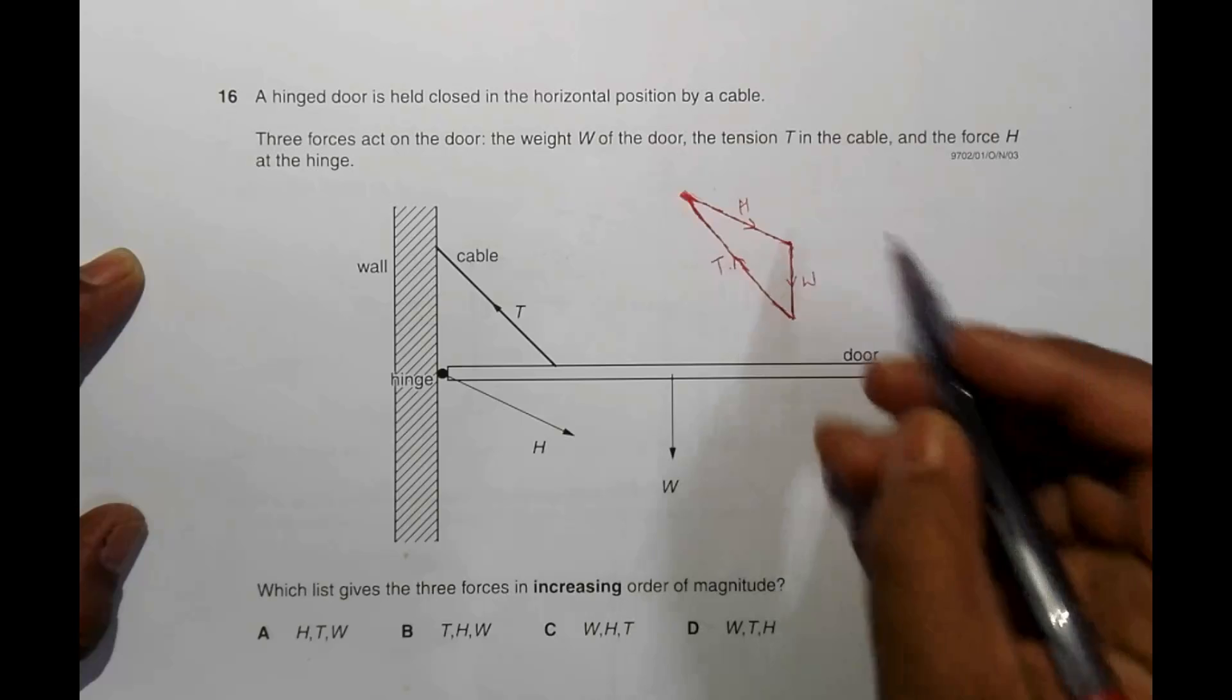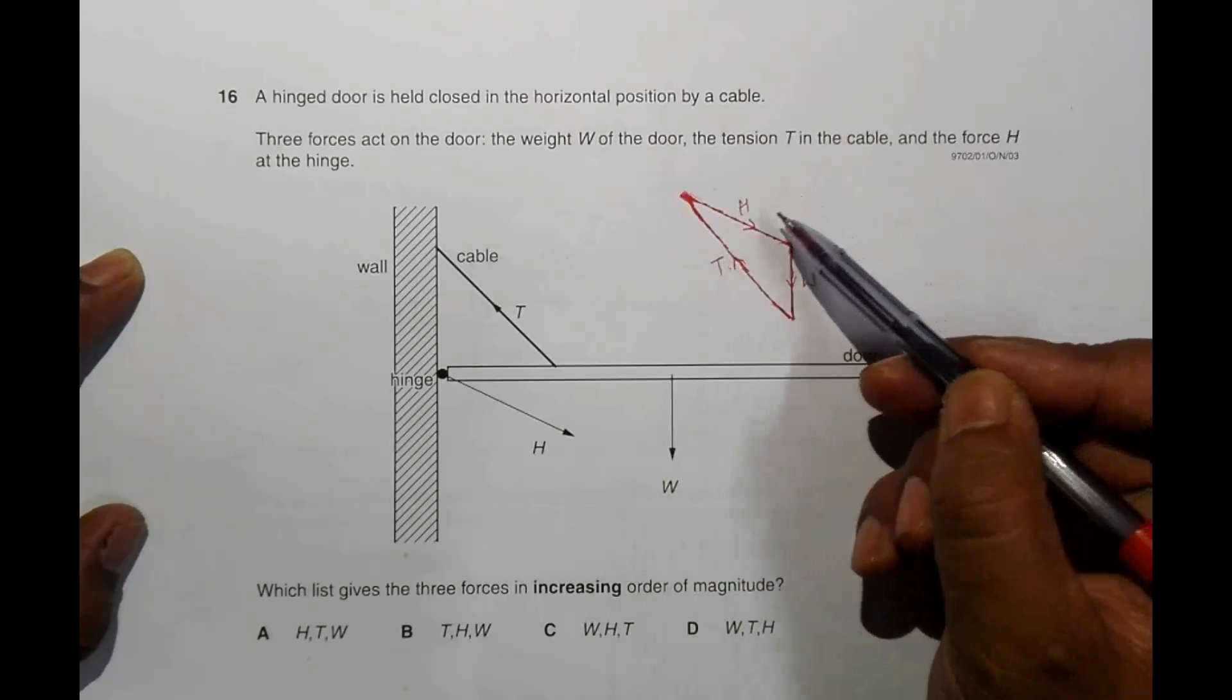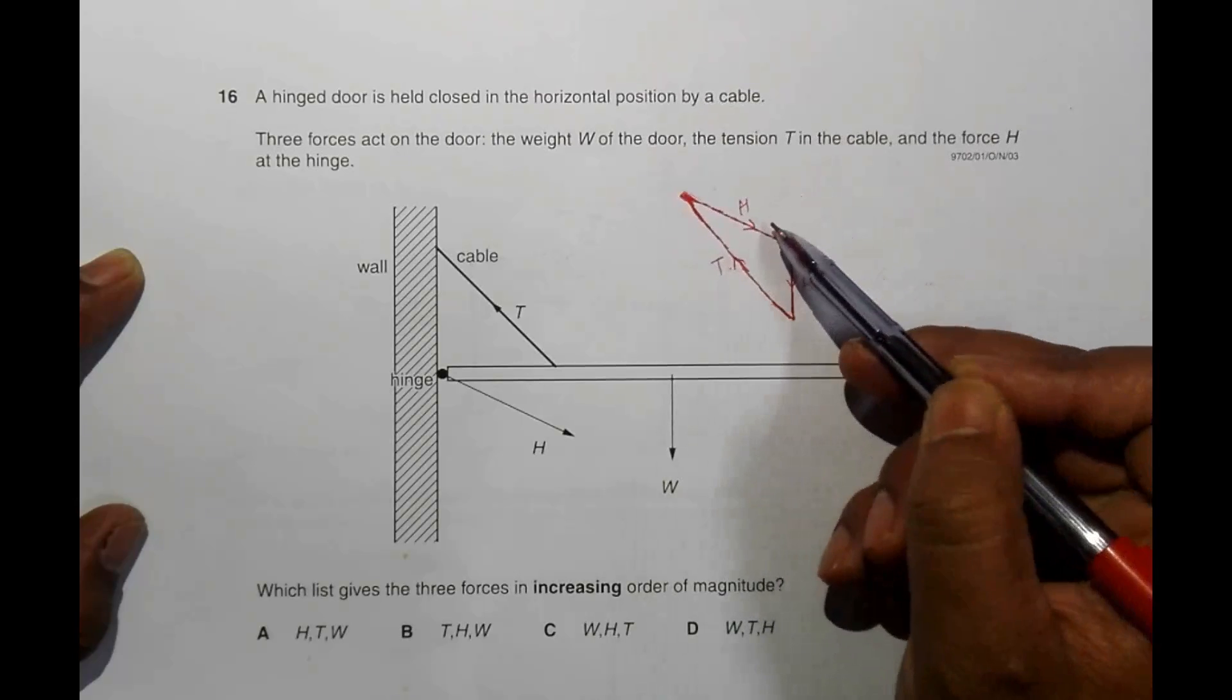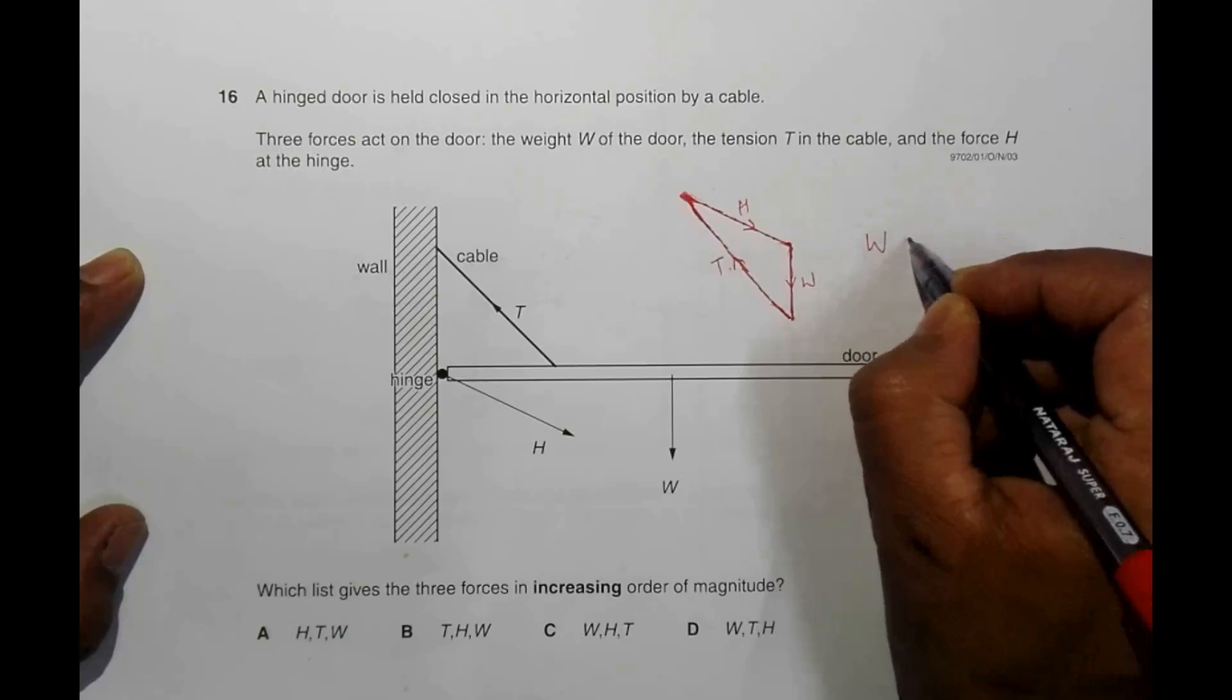So that means these three forces are forming up, closing to form a triangle. So that's why this diagram is correct. So when I look at this diagram, definitely T is the largest.